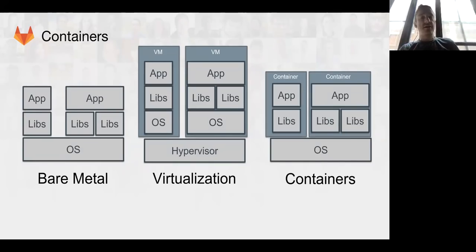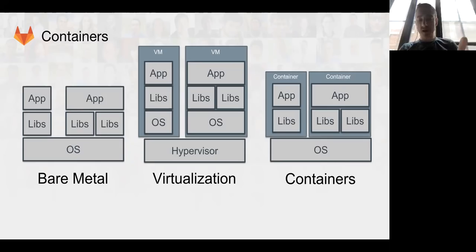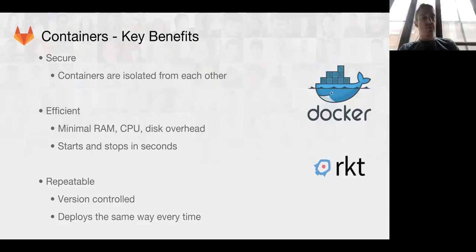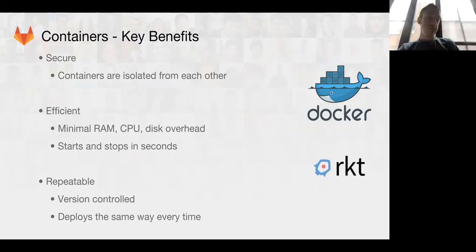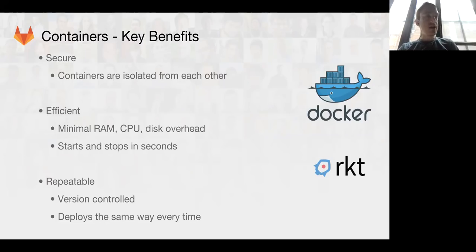Enter containers, which try to take the best of both worlds. You have a single copy of the operating system with applications running, but with protections around them to help them run securely — like virtual machines — and allowing you to swap them out without impacting other containers or the OS. The operating system itself isolates containers from each other rather than running a virtual machine that boots a new OS each time. They are much more efficient: less RAM, less CPU, far less disk overhead. And because they aren't starting and stopping an operating system each time, they start and stop in seconds rather than minutes — making it very easy to scale them dynamically. They also retain the same repeatability factor of virtual machines.